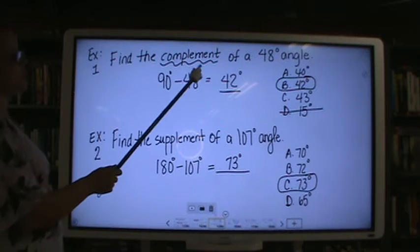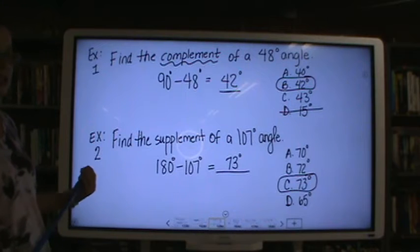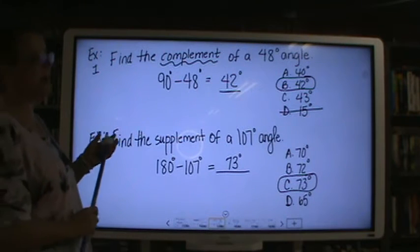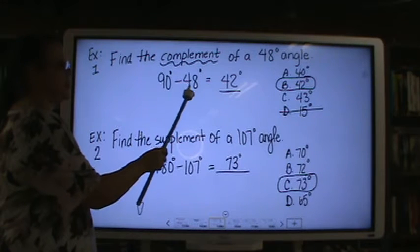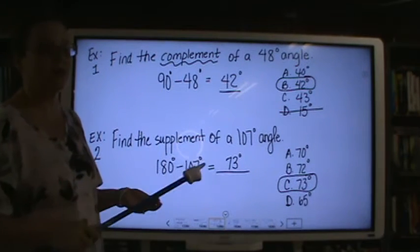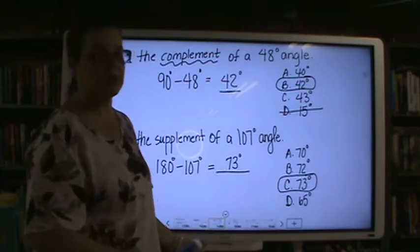Find the complement of a 48 degree angle. You would answer it by taking 90 degrees and subtracting 48 degrees because a complement angle is a total of 90 degrees. If you do that, then you would choose the 42.